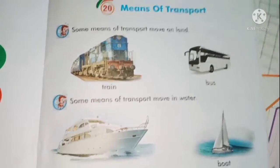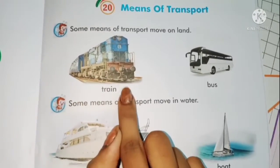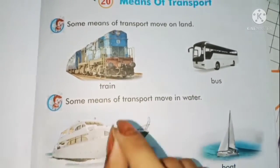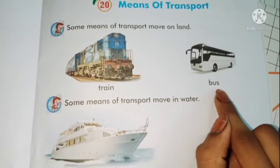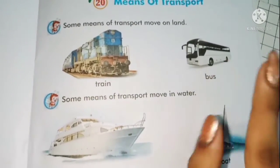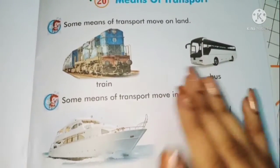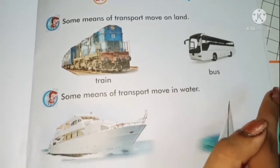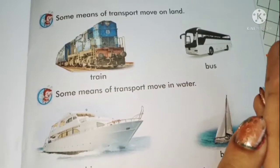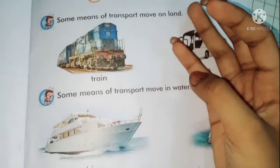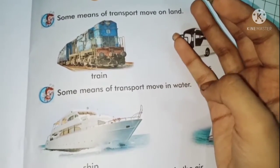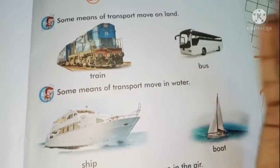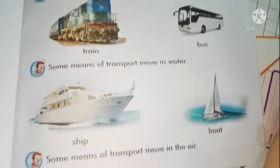For example, you have seen a train - that moves on a railway track, so train is land transport. Bus is also land transport. Some more examples: car is also land transport, bike is also land transport, cycle and auto rickshaw are also land transport. So all these are land transport.